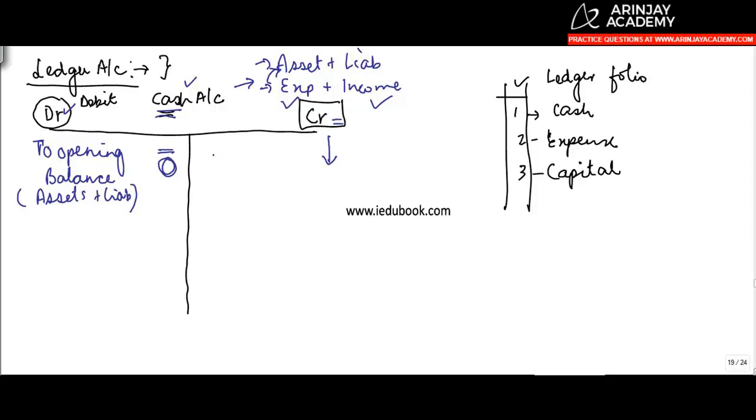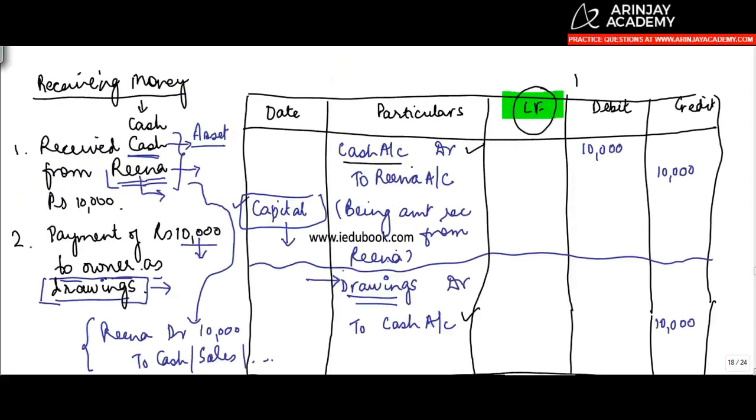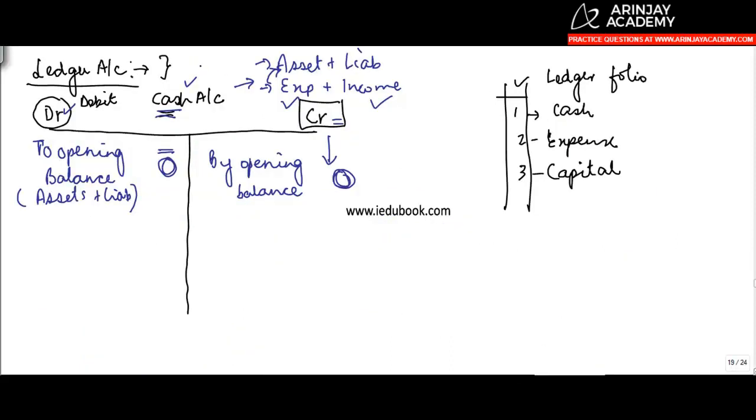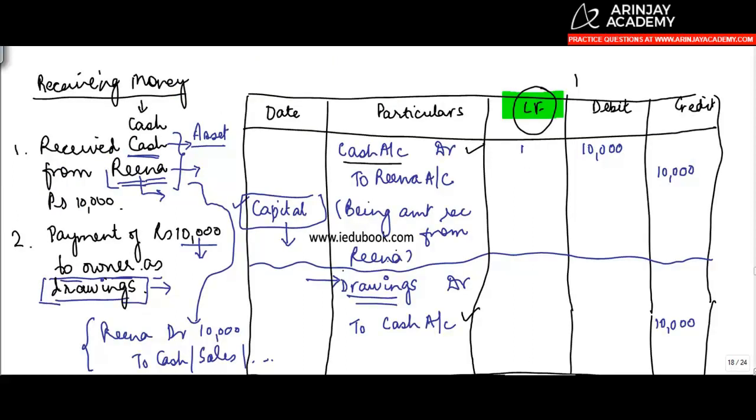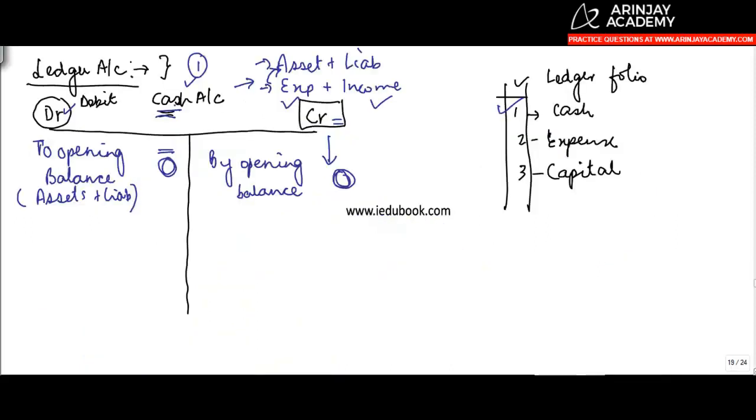This opening balance, if it is a debit balance, will come on this side. If the opening balance is credit, it comes here and you write 'By Opening Balance'. Then you keep on recording various transactions. Now you must have understood by now how journal entries move.